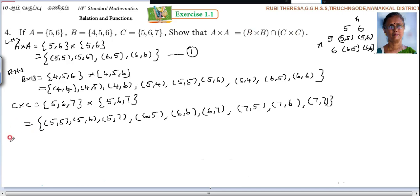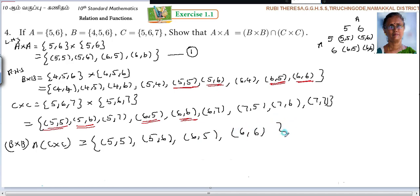So next what you should do in the RHS? B cross B intersection C cross C. Intersection means what? Common for both. The elements it should present in B cross B as well as in C cross C. So what are the elements that is present there? How you can find it very easily? What are the elements here? (5,5). Just you check whether (5,5) is present here. Yes, this is here. Let me take the different colour. (5,5), (5,5). Here (5,6), (5,6), (5,6), (5,6). (6,5), (6,5), (6,5), (6,5). (6,6), (6,6).